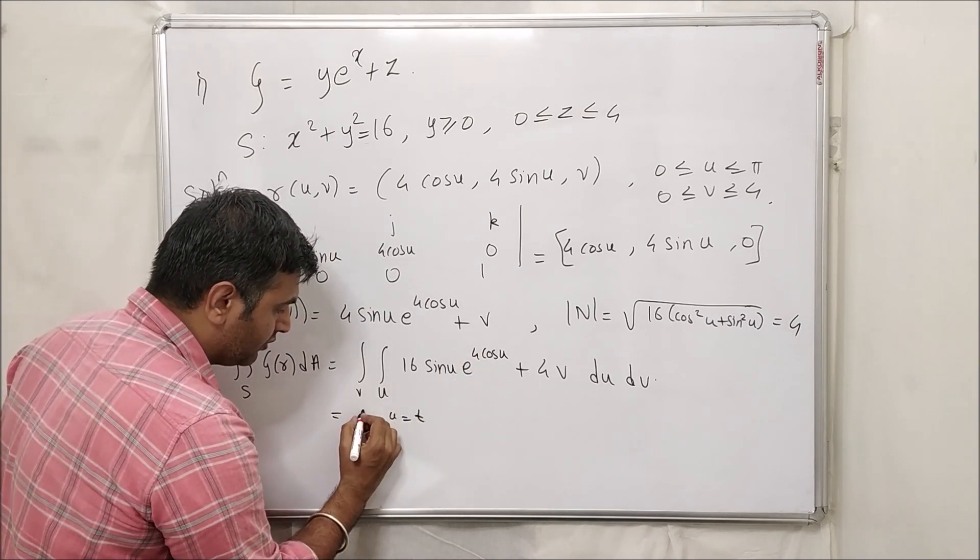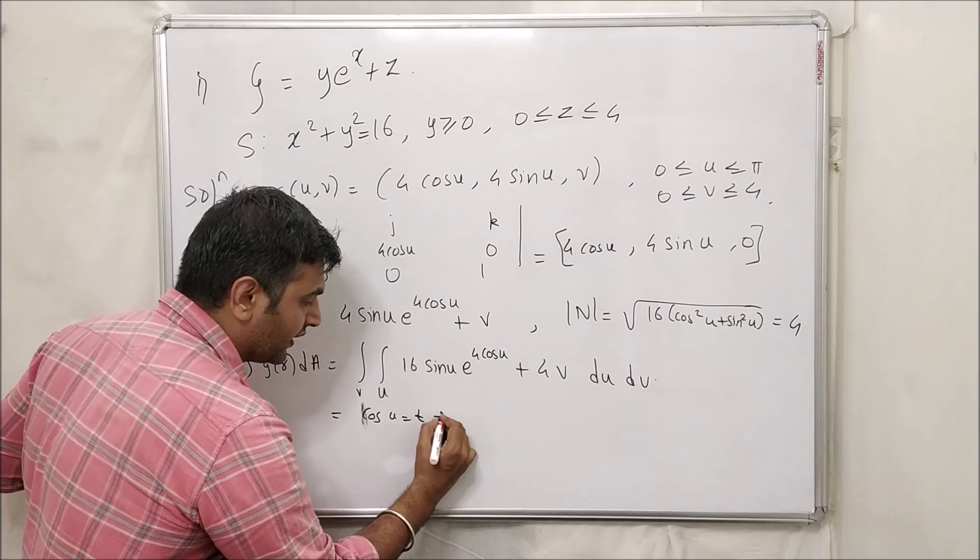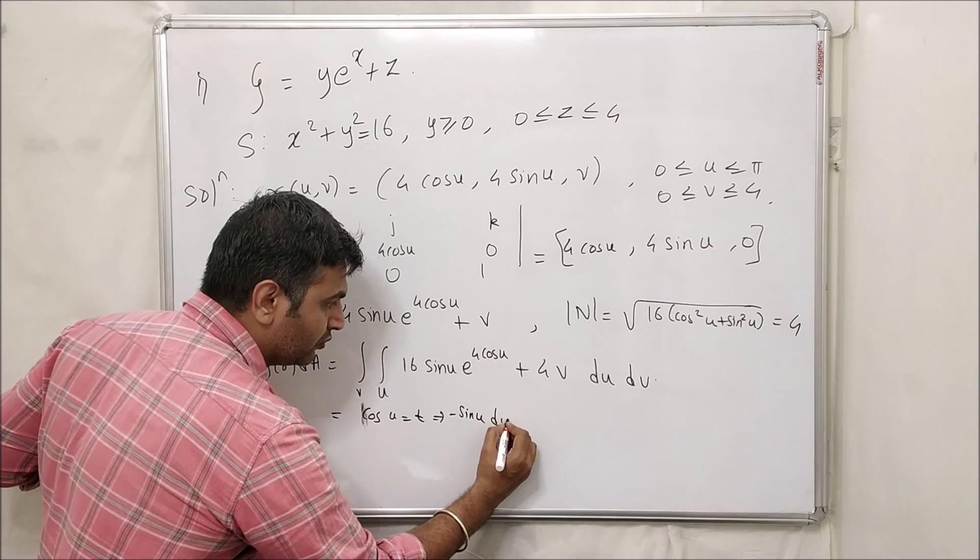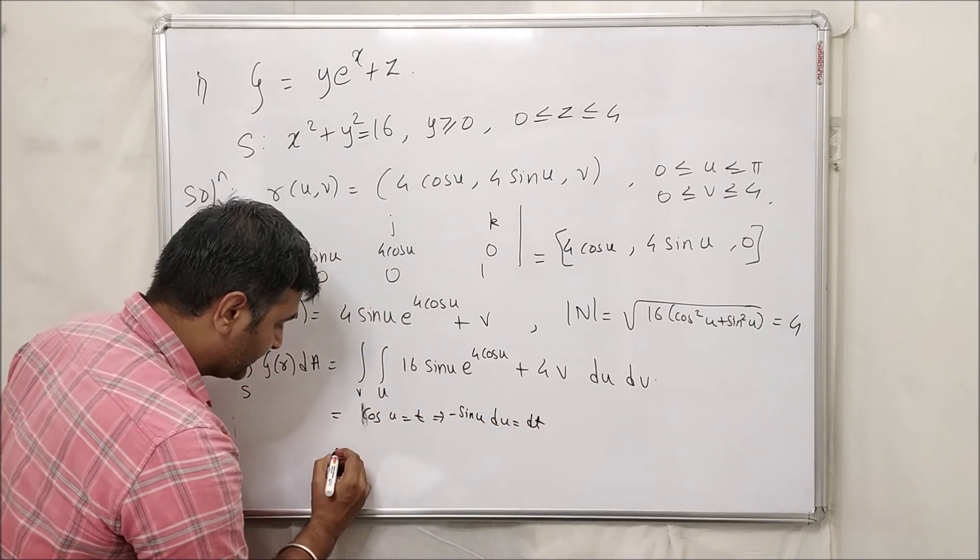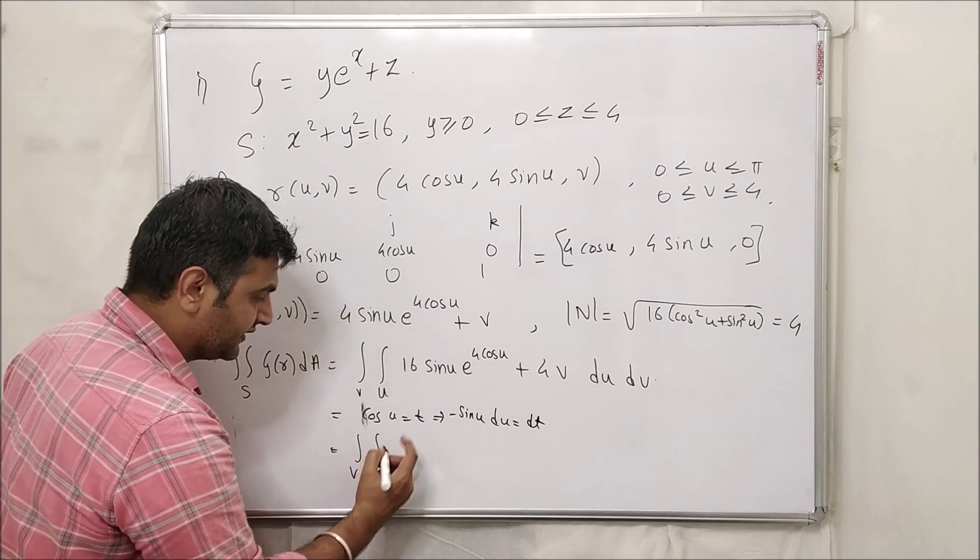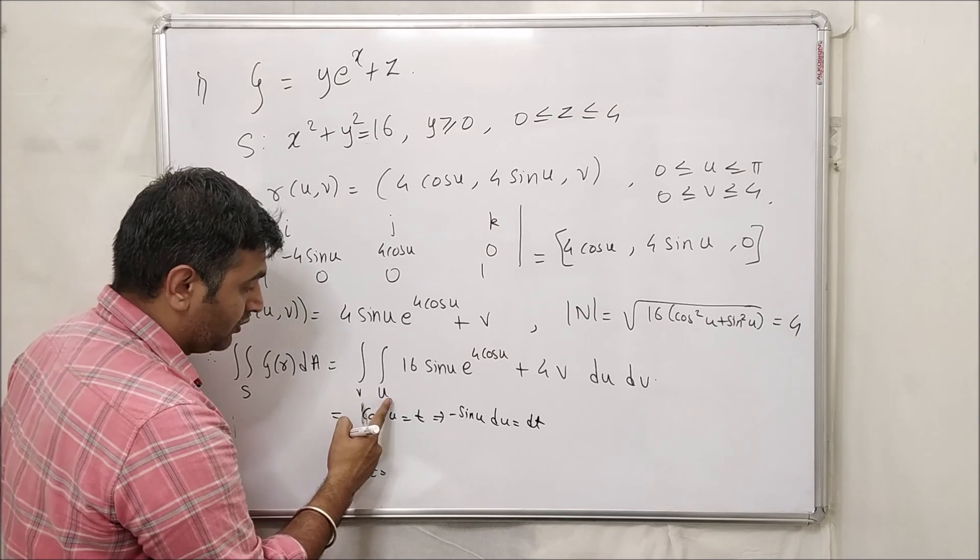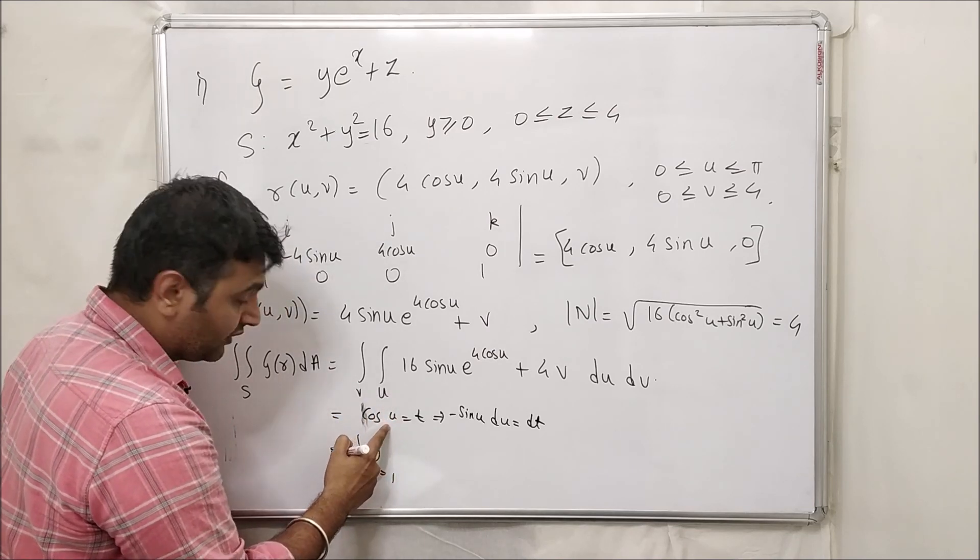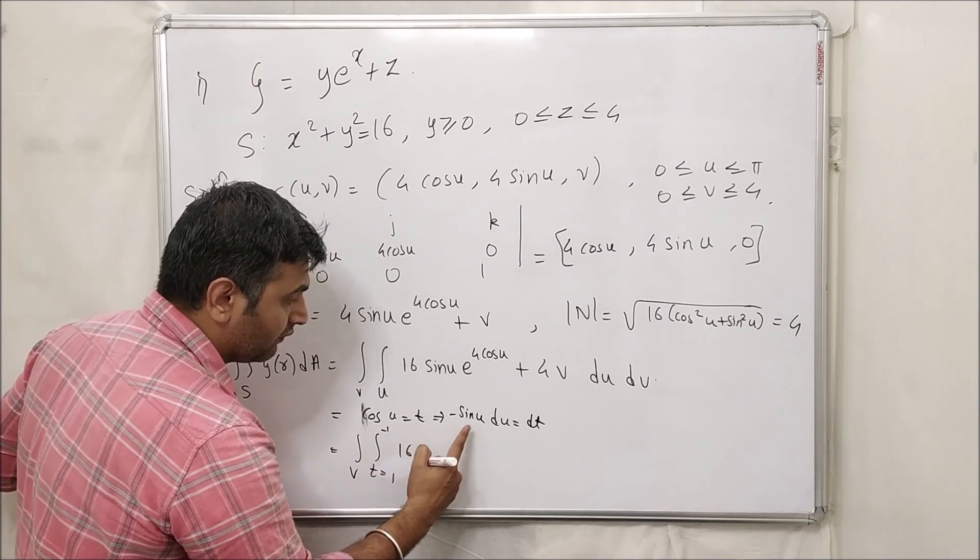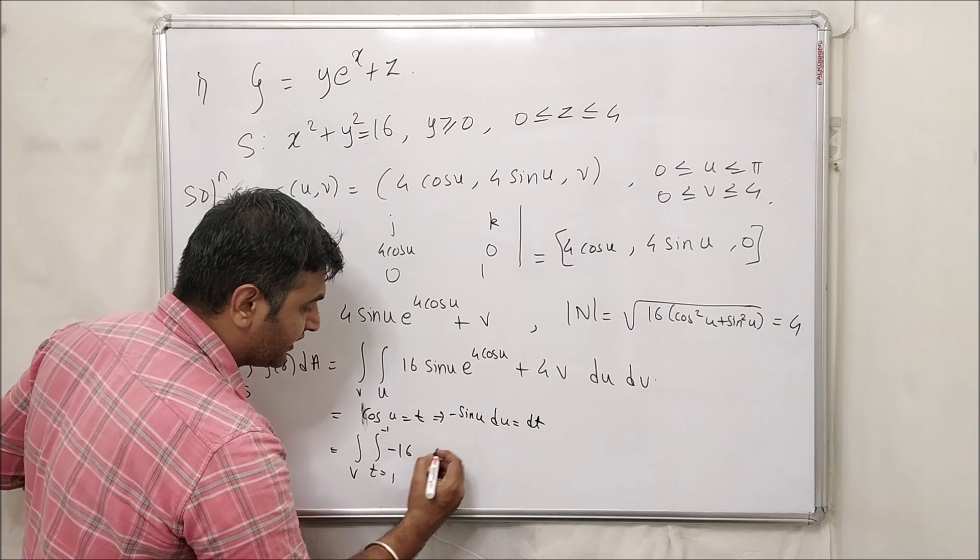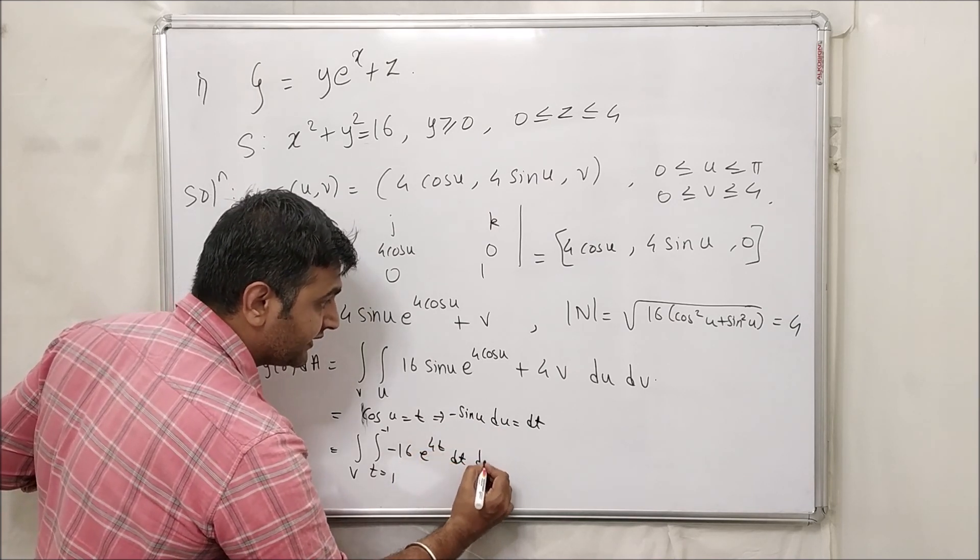So if I put my, let us put cos u equal to t. So what do you get? You have minus sin u du equal to dt. Alright, so for this one you have double integration v as it is. Now what will be the limits of t when my u is 0? Cos 0 is 1 and when my u is pi, cos pi is minus 1. I have 16 minus sin u du, so it's nothing but dt.